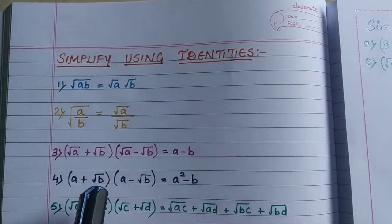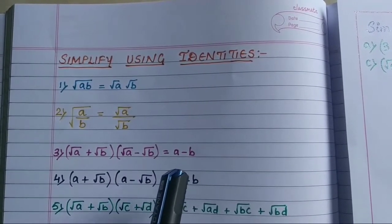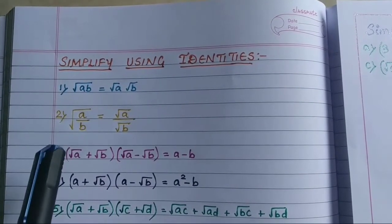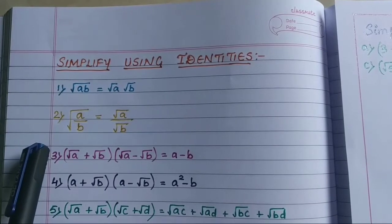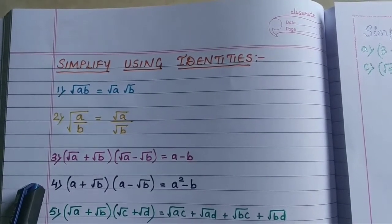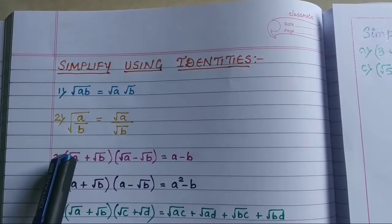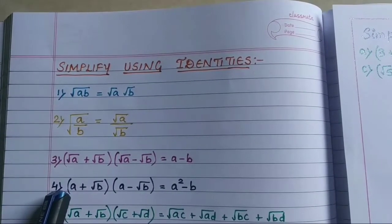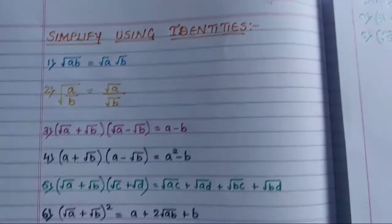The fourth identity is: A plus root B, times A minus root B, equals A squared minus B. You may feel that the third and fourth identities are similar, but they are not — in the third identity, A is under a root, whereas in the fourth identity, A is not under any root.